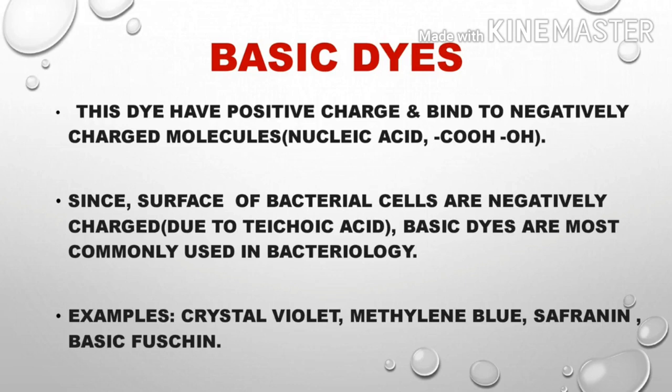Examples of basic dyes include crystal violet, methylene blue, and safranin. Crystal violet and safranin are used in gram staining to distinguish gram positive and gram negative bacteria, because both are basic dyes that bind to the negatively charged bacterial cell wall.